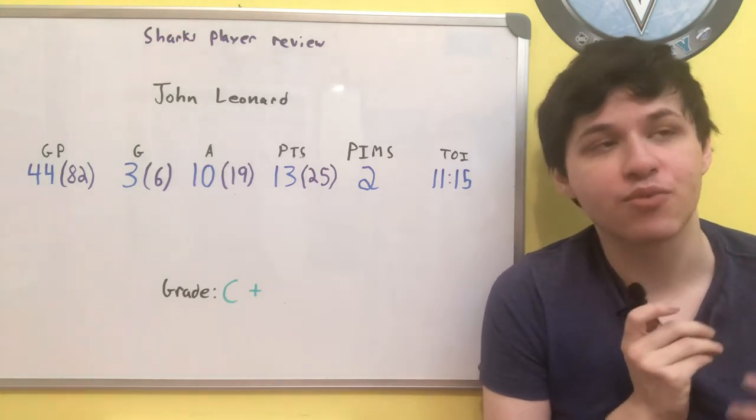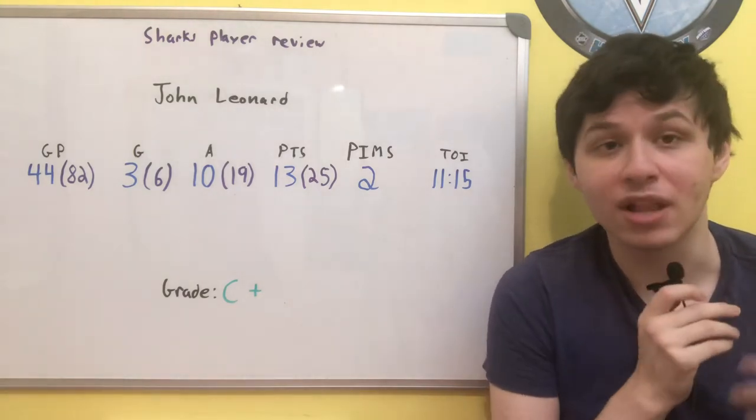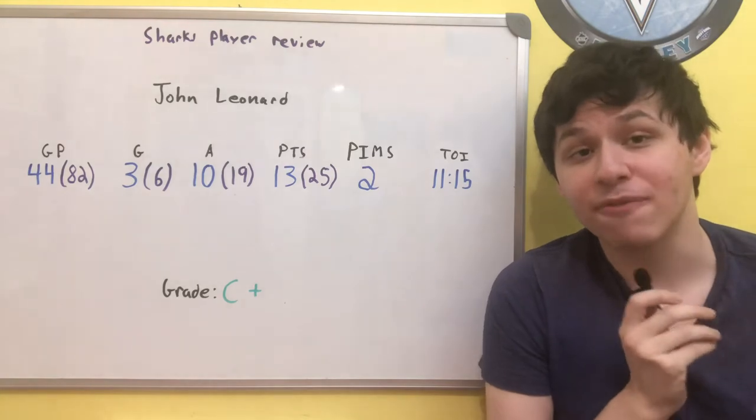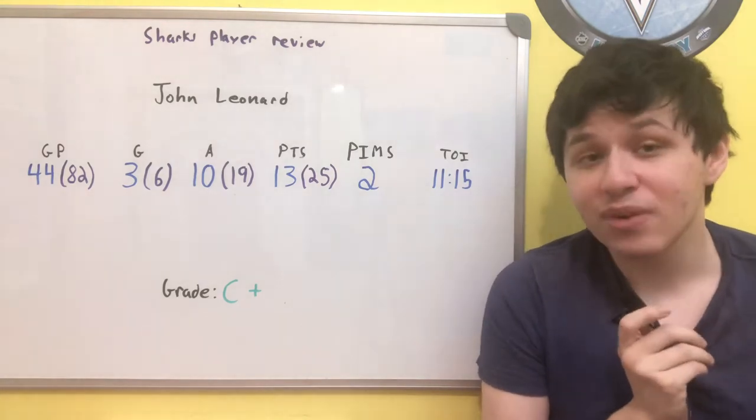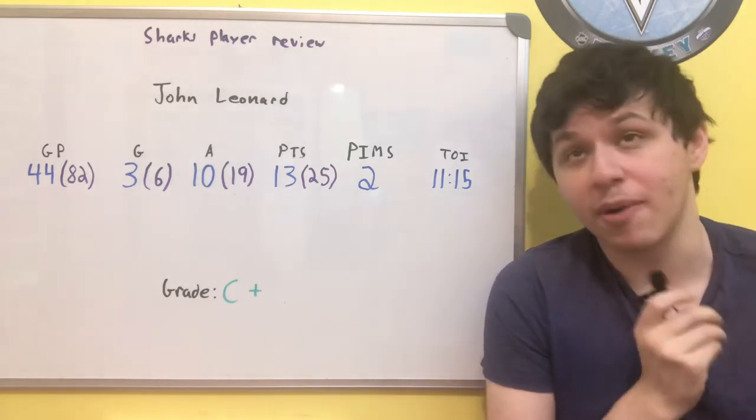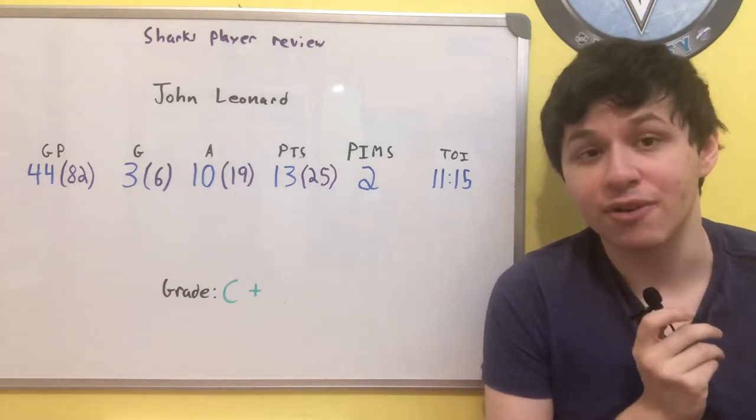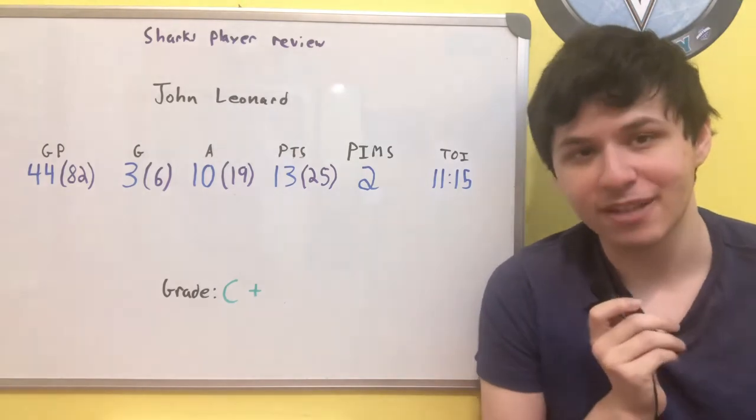There was something that I talked about with Ryan Donato in a previous video as well in his review, where Ryan Donato was about four less goals than expected. John Leonard was about three less goals than expected, which was third place on the Sharks for goals less than expected.